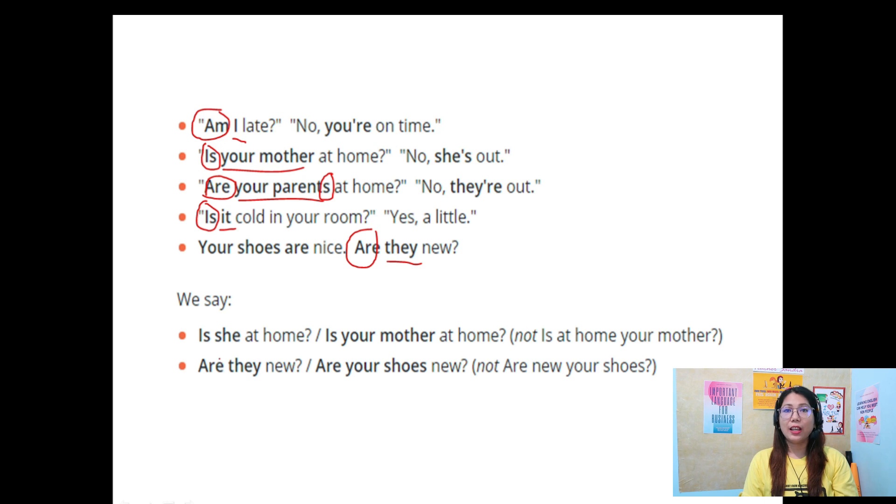So we say, is she at home? Is your mother at home? So, not, is at home, your mother? So the verb plus subject, not, verb, and then the subject is at the end. No. So they are always together. Okay.